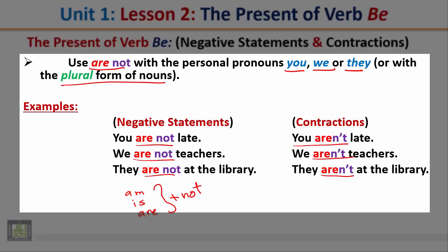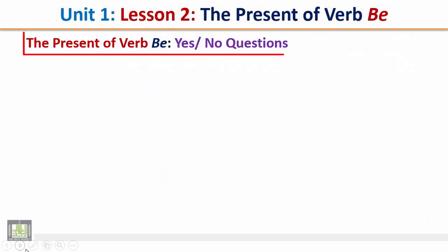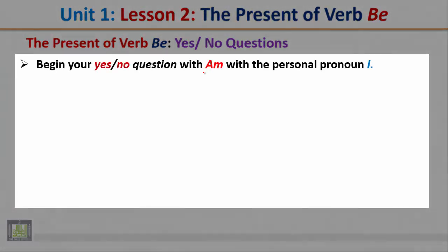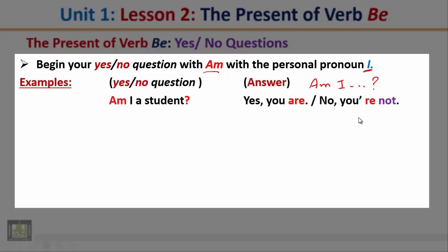Examples: 'You are not late' — contracted: 'you aren't late.' 'We are not teachers' — contracted: 'we aren't teachers.' 'They are not at the library' — contracted: 'they aren't at the library.' Notice we add the word not after the verbs am, is, or are. The Present of Verb Be: yes-no questions. Begin your question with am with the personal pronoun I. For example: 'Am I a student?' The answer could be 'Yes, you are' or 'No, you are not.'